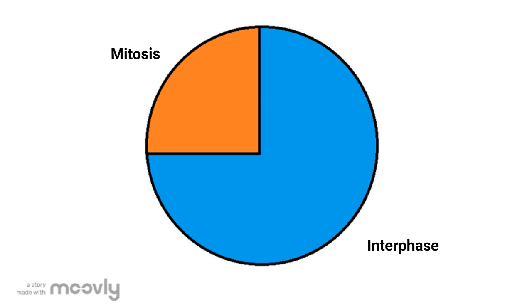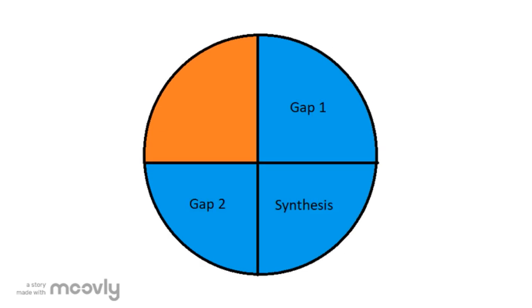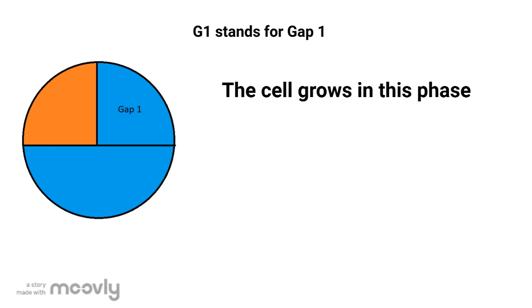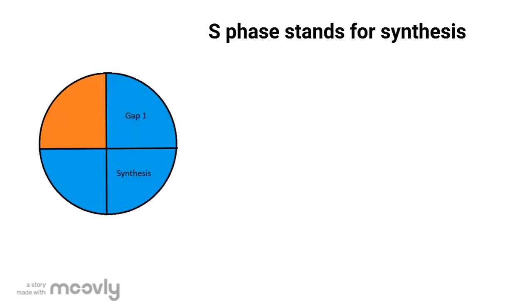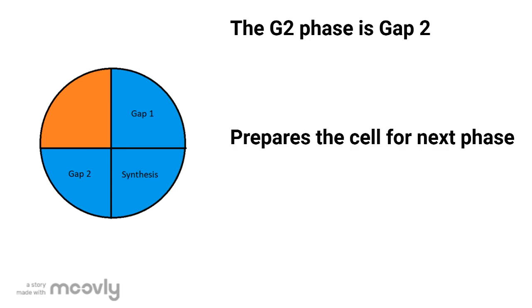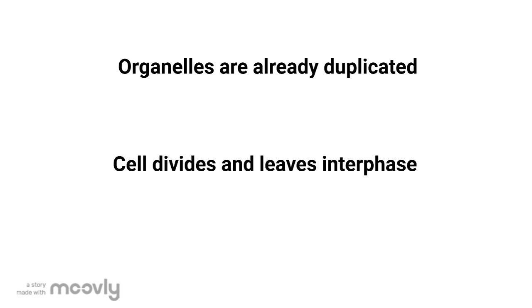Interphase consists of three stages: GAP1, Synthesis, and GAP2. This phase is much similar to a checklist that a pilot goes through before takeoff. The G1 phase stands for GAP1 — this is where the cell grows and matures, much like a child, and it also doubles its organelles. The S phase stands for Synthesis — this is where the DNA is replicated and prepared for the cell to divide. The chromatid of the chromosome is where the double helix resides. The G2 phase stands for GAP2 — this is where the cell prepares itself for the next phase, mitosis. The organelles are already duplicated, and this is the stage where the cell divides and leaves interphase.